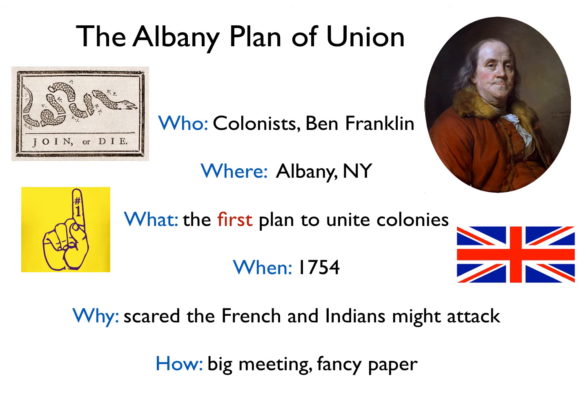Ben Franklin's plan was that one of the things they should definitely do is unite. Instead of 13 different militias, they should have maybe one, with one government running things. The king was in charge, but he was so far away — they had to do something. This document doesn't go very far, though. The people at the Albany meeting like it, and Franklin obviously likes it, but when the representatives take it back to their colonies, nobody's really ready for it. Nobody really wants to unite.